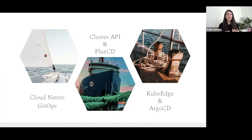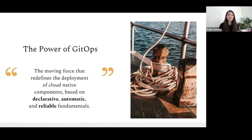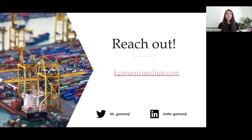This concludes the talk and the examples for today. We started by introducing cloud native GitOps tools such as Argo CD and Flux, then deep dived into real use cases: provisioning infrastructure with Cluster API and Flux CD, and pushing applications towards edge components using KubeEdge and Argo CD. This has been possible because GitOps is the moving force redefining the deployment of cloud native components, based on declarative, automatic, and reliable fundamentals. If you have questions, I'll be writing a Medium article with more details on this setup, and I'm available on Twitter and LinkedIn. Enjoy the rest of the conference — thank you.